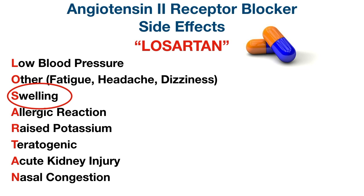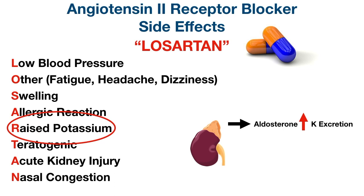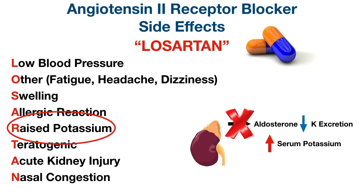S stands for swelling, which can occur in the hands and feet, especially if acute kidney injury is present from taking an ARB. Swelling also reminds us of angioedema, which is associated more with ACE inhibitors but can rarely occur with ARBs too. A stands for allergic reaction — sometimes ARBs can cause a rash. R stands for raised potassium, known as hyperkalemia. Since ARBs block aldosterone release and aldosterone normally increases potassium excretion, less excretion leads to higher potassium levels in the blood.